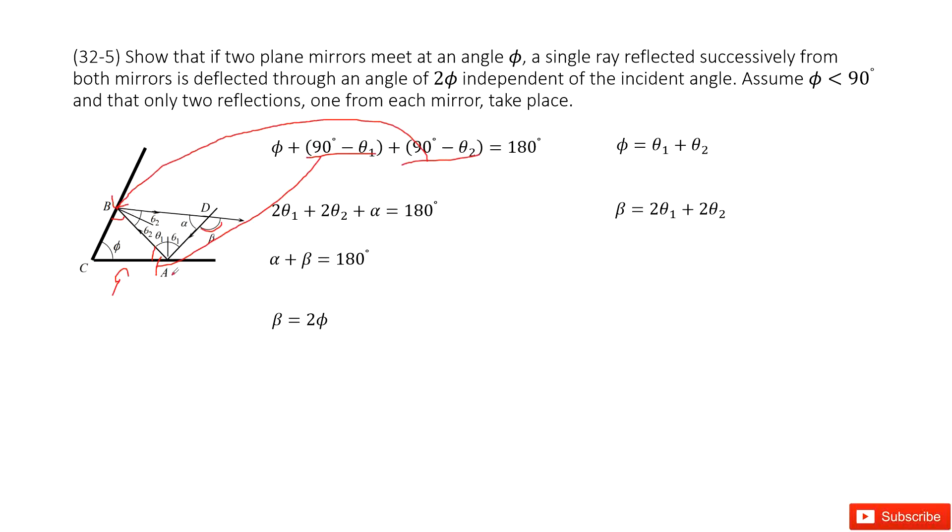Now in this triangle, we can see phi plus 90 degrees minus theta 1 plus 90 degrees minus theta 2 equals 180 degrees. When we simplify, we get phi equals theta 1 plus theta 2.